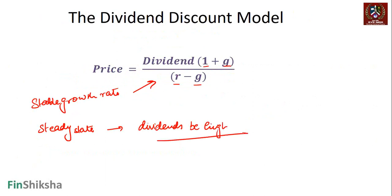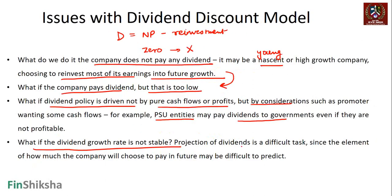Dividends are high only for steady-state companies; otherwise earnings get reinvested. Projecting dividends is a difficult task because you first have to project net profits, and then you have to project the company's choice of how much to pay as dividends — which is an additional uncertain prediction. So projection of dividends is doubly difficult.